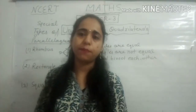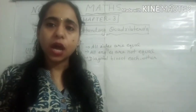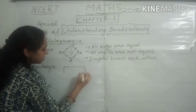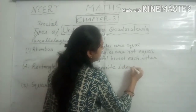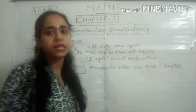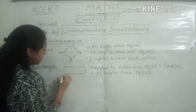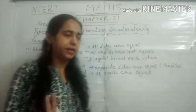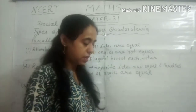The next special parallelogram is a rectangle. In a rectangle, opposite sides are equal and parallel. All angles are equal — each angle is 90 degrees. The diagonals of a rectangle also bisect each other.